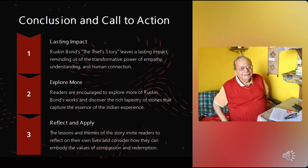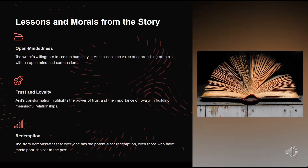This brings us to the lessons and takeaways from the story. First, open-mindedness: the writer's willingness to see the humanity in Hari teaches the value of approaching others with an open mind and compassion. Second, trust and loyalty: Hari's transformation highlights the power of trust and the importance of loyalty in building meaningful relationships. Third and most importantly, redemption: the story demonstrates that everyone has the potential for redemption, even those who have made poor choices in the past.